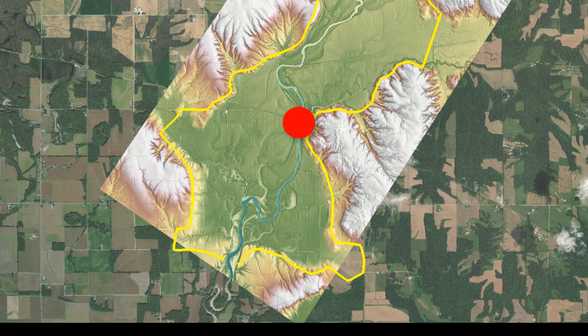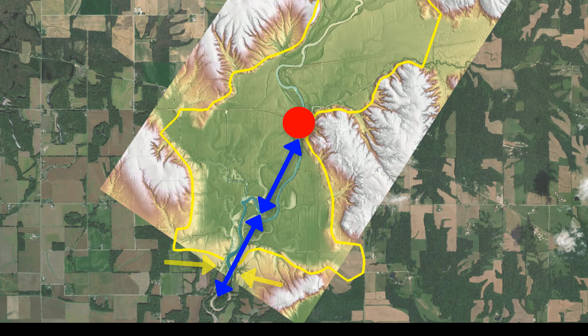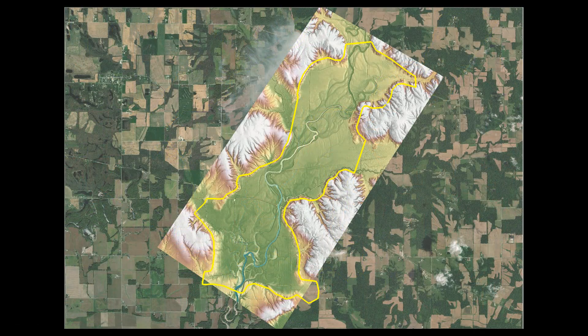For the downstream boundary, there is a significant constriction about 1.5 floodplain widths downstream of the bridge. This is an ideal location to place the downstream limit, especially if using a normal depth water surface elevation at the downstream limit. A coarse model run could help confirm that these model domain limits are sufficient.